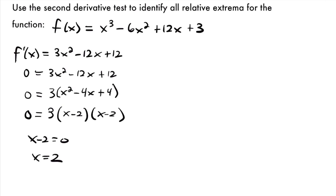Now the next part of our second derivative test is to take the second derivative of our function. We're going to take the derivative of our first derivative. f''(x) = 6x — that's 2 times 3 with the exponent subtracted — and then minus 12, since the derivative of -12x is -12, and the derivative of the constant 12 is zero. Now we can plug our critical value of x = 2 into our second derivative.